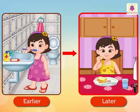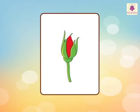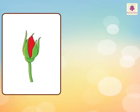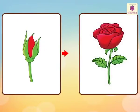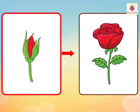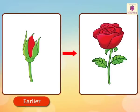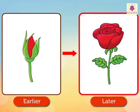Let us look at another example. First, a bud is formed and then it blooms into a flower. So, we can say that the activity of formation of a bud happens earlier, while the activity of it blooming into a flower happens later.